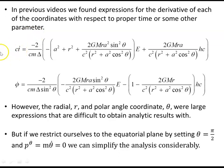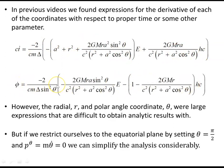For a particle of mass m, we use proper time tau. The radial r and polar angle coordinate theta gave very large expressions, difficult to obtain analytic results from due to their complex nature. The simpler results for t dot and phi dot came from a certain symmetry — from Killing vectors — as covered in the Kerr geodesic series earlier.